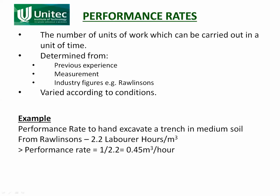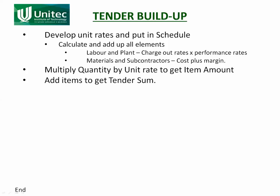For the tender buildup, you develop the unit rates and put them in the schedule of prices. Working from first principles, you figure out the labor and plant required — charge-out rates multiplied by performance rates — which gives you the rate for labor and plant. For materials and subcontractors, it's your cost plus your margin. Then you multiply the quantity by the unit rate to get the item amount, and all the item amounts add up to get the tender sum.